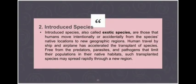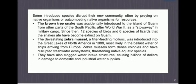Introduced species, also called exotic species, are those that humans have intentionally or accidentally moved from their native locations to new geographical regions. Free from the predators, parasites, and pathogens that limit their populations at home, such species may spread rapidly. The brown tree snake was accidentally introduced to Guam after World War II as a stowaway in military cargo. Since then, 12 species of birds and 6 species of lizards have become extinct on Guam.